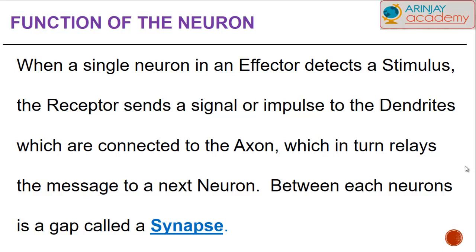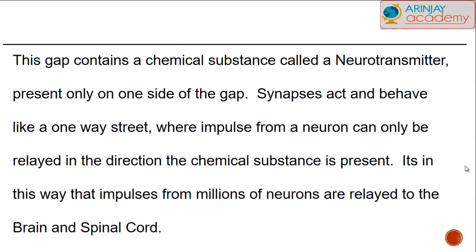What is the function of the neuron? When a single neuron in an effector like a muscle detects a stimulus, the receptor from the muscle sends a signal or impulse to the dendrites, which are connected to the axon, which in turn relays the message to the next neuron. Neurons are not directly interconnected because there is a space or gap dividing them. This space or gap is called the synapse.